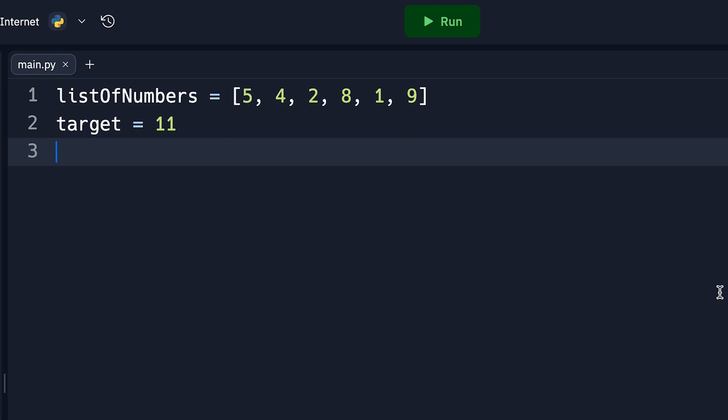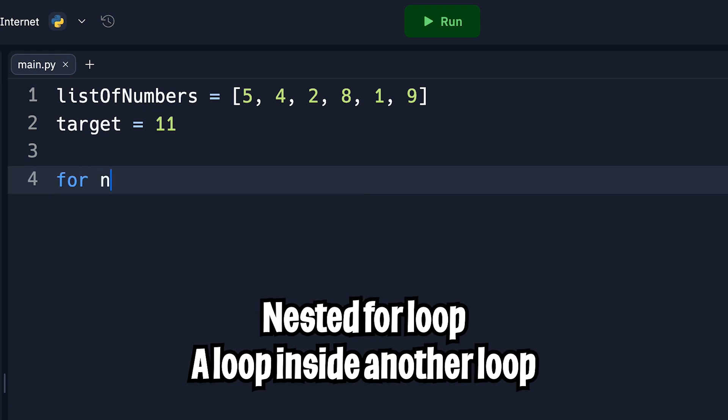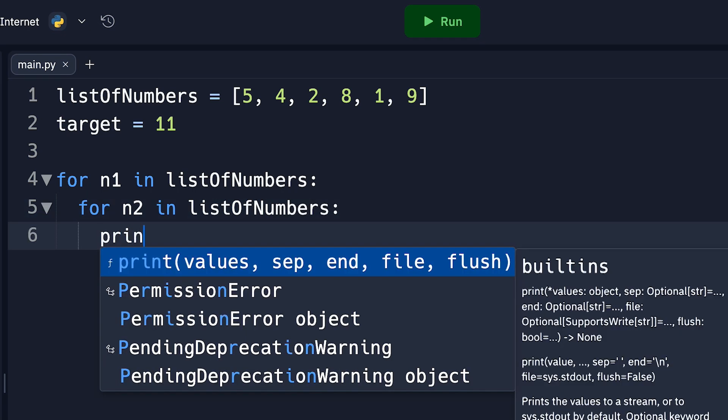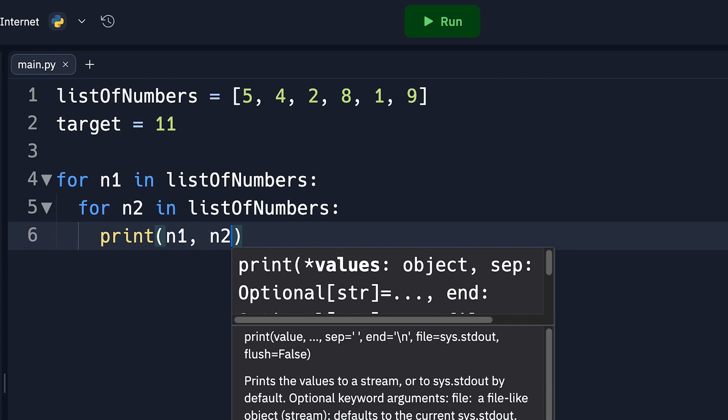So to put this into code, all we have to do is just write a nested for loop. So we can do for N1 in list of numbers. And then after that, hit enter and type for N2 in list of numbers. And now hit enter. And just to help you visualize, let's do print N1 comma N2. And now let's click run.